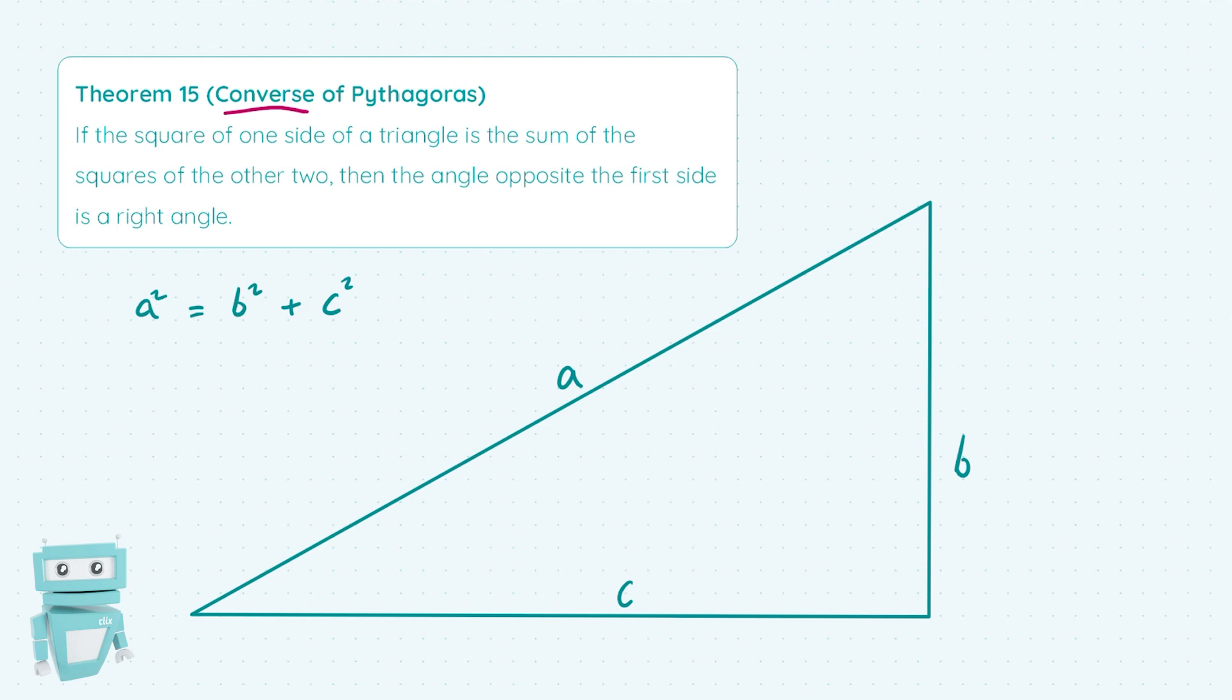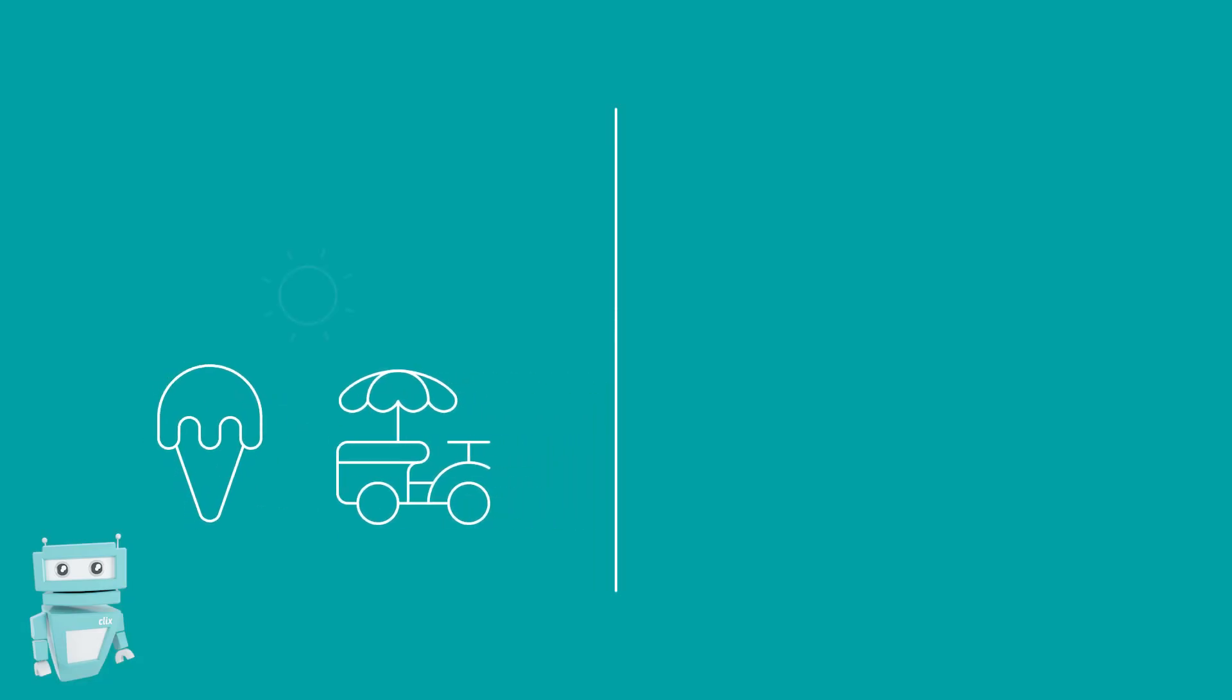So an example of this in everyday language might be, let's say that I like going for ice cream every time the Sun comes out, the converse of that statement would be every time the Sun comes out I like going for ice cream.